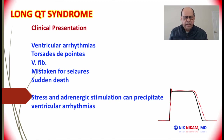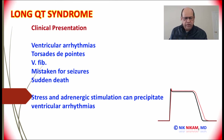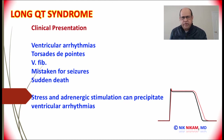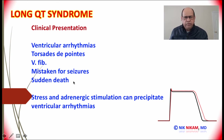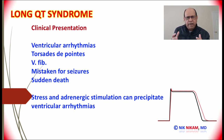What is the clinical presentation like in those patients who have either idiopathic or acquired long QT syndrome? These patients may present with ventricular arrhythmias and palpitations. They may also present with torsades. Ventricular fibrillation is usually a lethal complication. Sometimes these patients are mistaken to have seizures, especially in the congenital group, and sudden death and syncope may be some of the other symptoms frequently associated with long QT syndrome. QT prolongation can also be brought out by excess stress or adrenergic stimulation, which can precipitate ventricular arrhythmias.